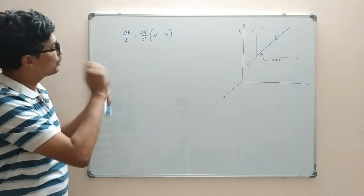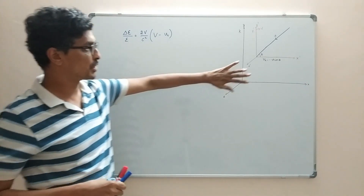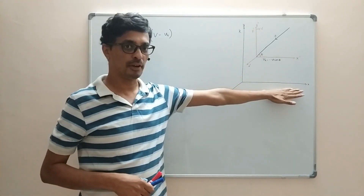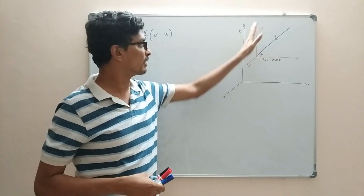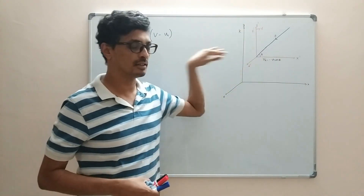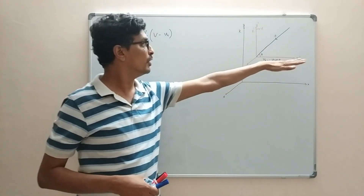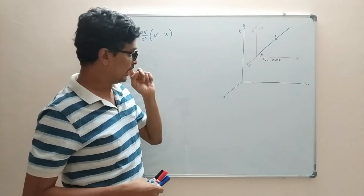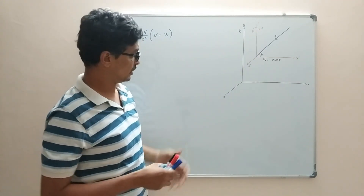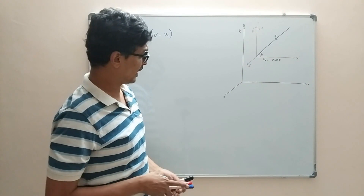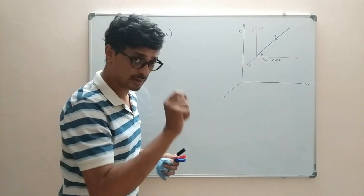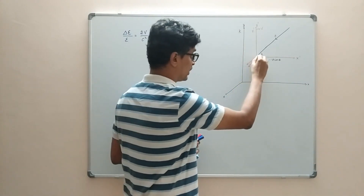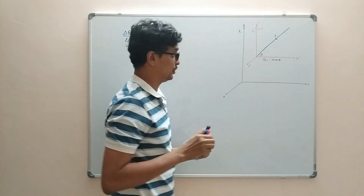Referring to the diagram: the black frame is our lab frame (the K frame), the red frame is the scatterer frame, and the blue represents the particle trajectory. Let us assume the scatterer is sitting at the origin, so all scattering events happen when the particle hits the origin.